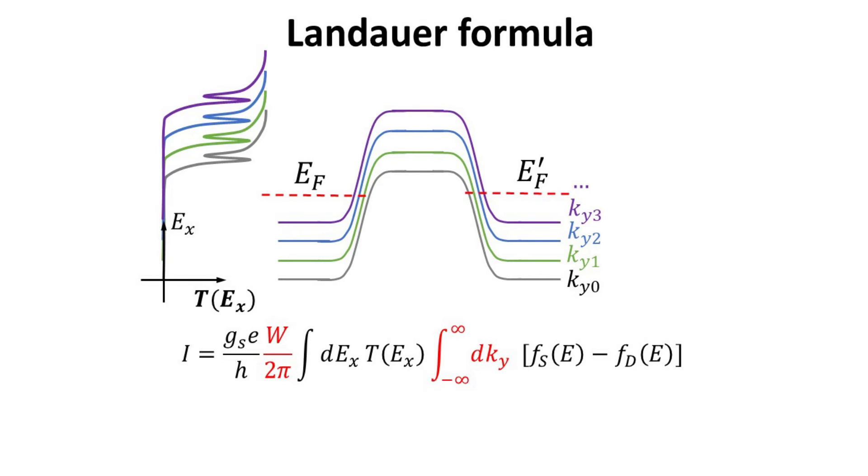To solve this analytically, we need to replace the discrete sum with its integral version, a trick often used in our previous videos. We shall also remind you the explicit form of the two Fermi functions in the source and drain contacts, with the shifted drain Fermi energy we discussed in last chapter.